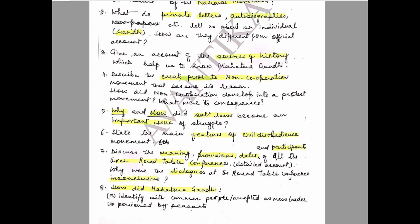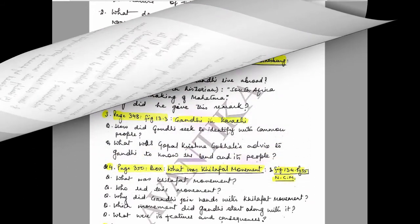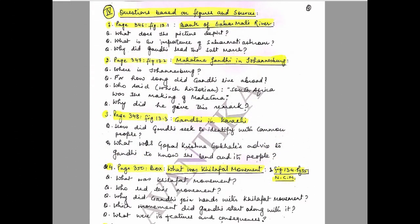Question 8: How did Mahatma Gandhi — A) identify with common people or be accepted as mass leader, and B) be perceived by the peasants? This is a detailed question. This ends our eight-mark questions, now coming to the fourth segment — questions based on figures and sources.